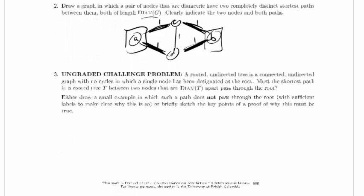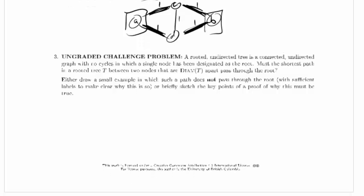And then there's this ungraded challenge problem. A rooted undirected tree is a connected undirected graph with no cycles in which a single node has been designated as the root. Must the shortest path in a rooted tree T between two nodes that are diametrically apart pass through the root? In other words, does the root have to be on the diameter? Either draw a small example in which such path does not pass through the root, or briefly sketch the key points of proof why this must be true.